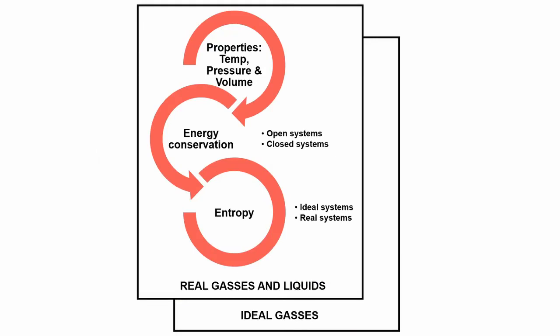Here is a graphical representation of the structure of this video series. First, we will cover properties of substances: temperature, pressure, volume, specific density, and specific volume. Then, we will consider energy conversion methods, covering closed and open systems such as a power station or an internal combustion engine. Lastly, we will look at entropy and study the differences between ideal systems and real systems for different configurations.